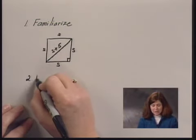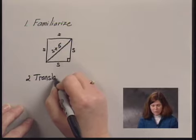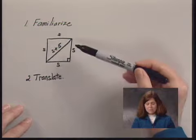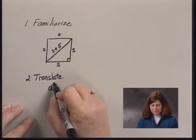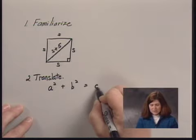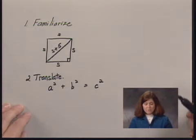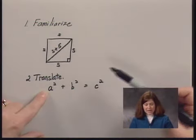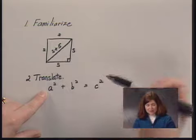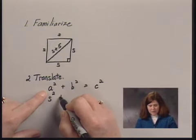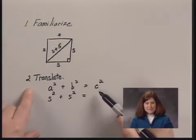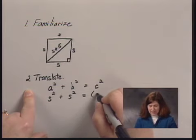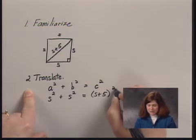When we translate to an equation, we're going to use the Pythagorean equation: A squared plus B squared equals C squared. This is true for any right triangle. A and B are the legs and C is the hypotenuse. In this case, A and B have length S, so I write S squared plus S squared. Since C is the hypotenuse, it has length S plus 5, so I write S plus 5, all squared.